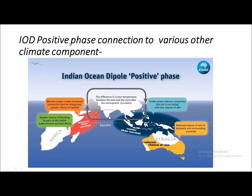During the positive IOD phase, warmer water develops over the western Indian Ocean, leading to convergence, cloud formation, and — through adiabatic cooling — heavy rainfall in East African countries. This also explains the late withdrawal of the Indian summer monsoon observed in 2019 and the drought conditions in the western part of Australia.